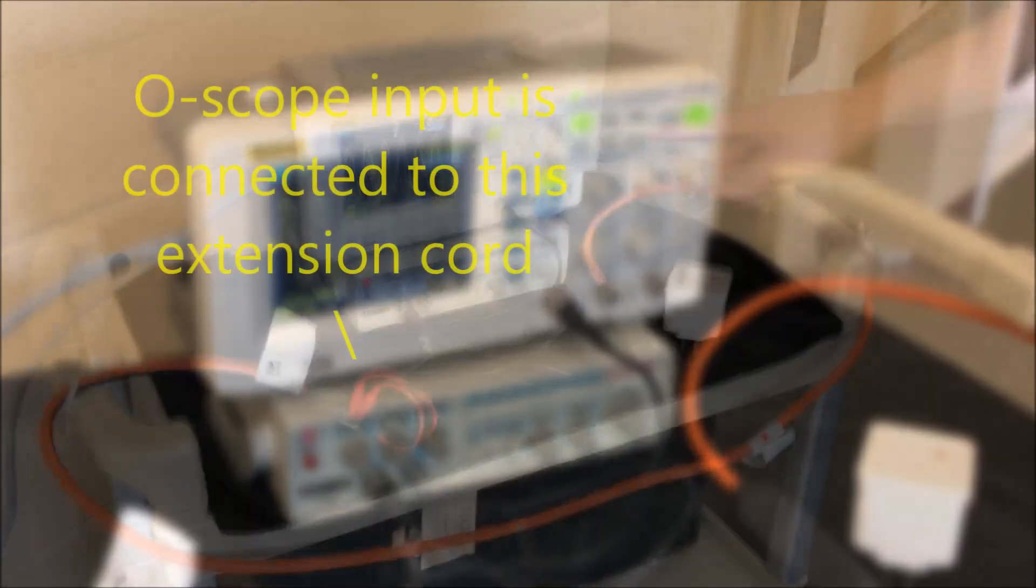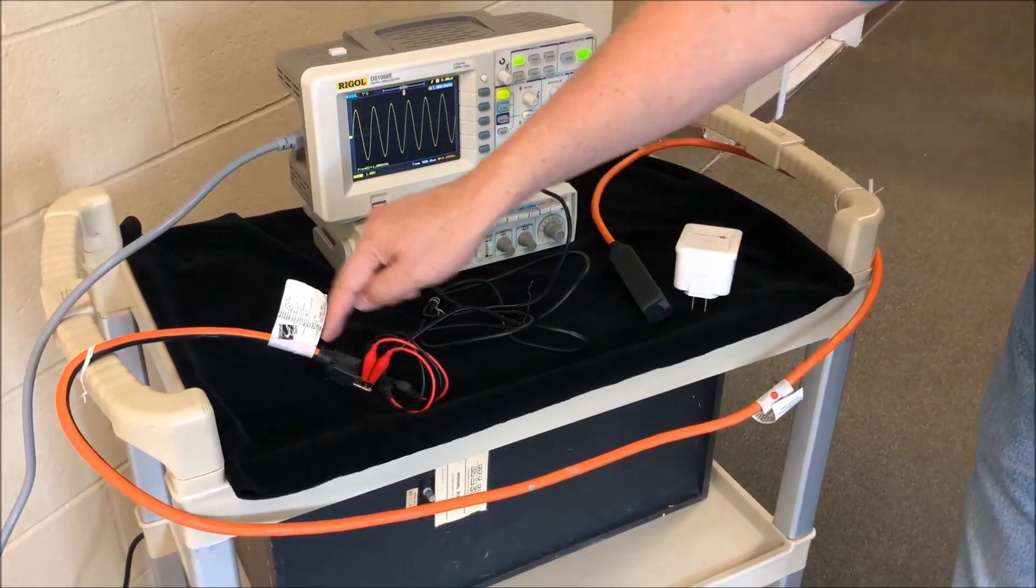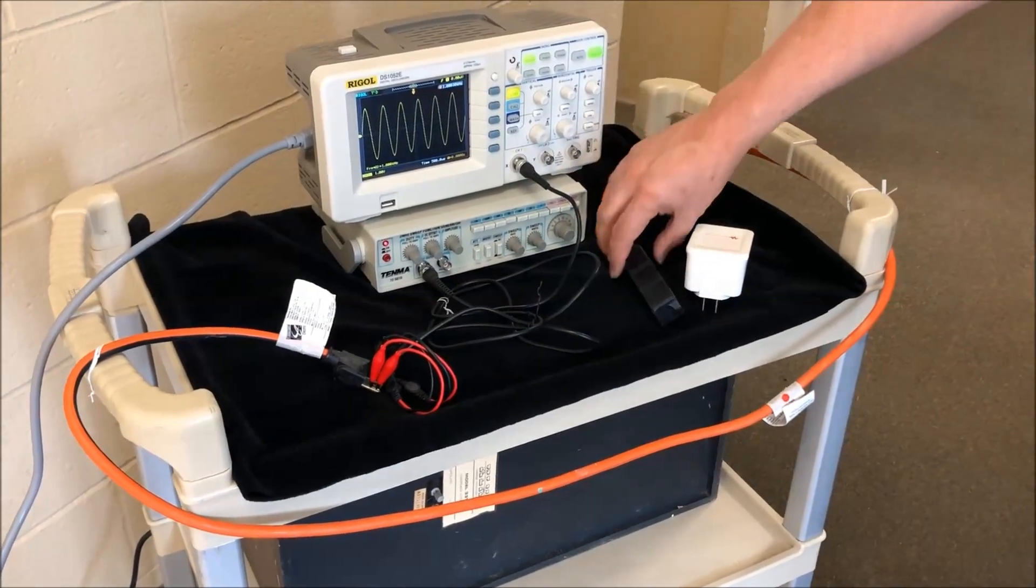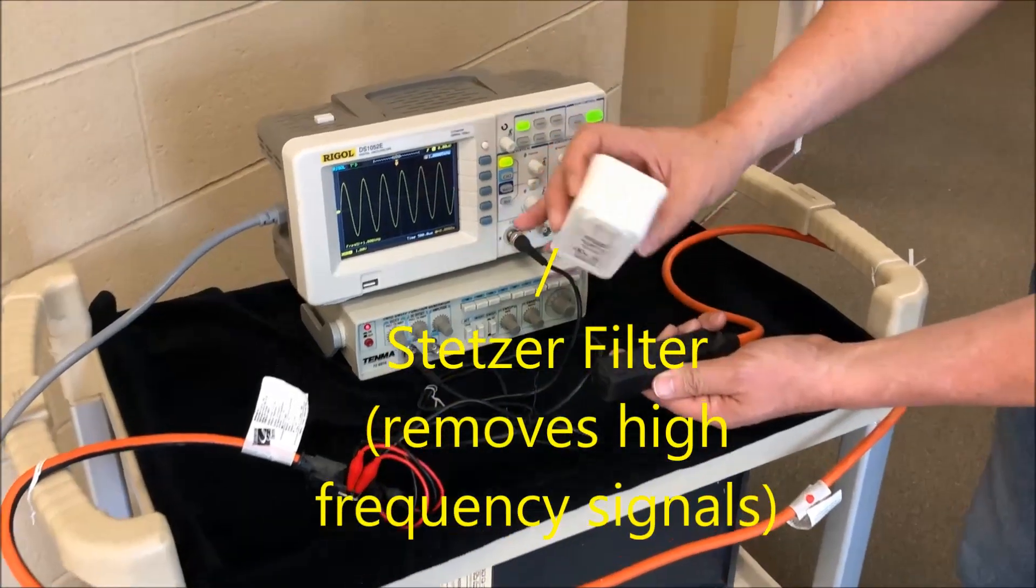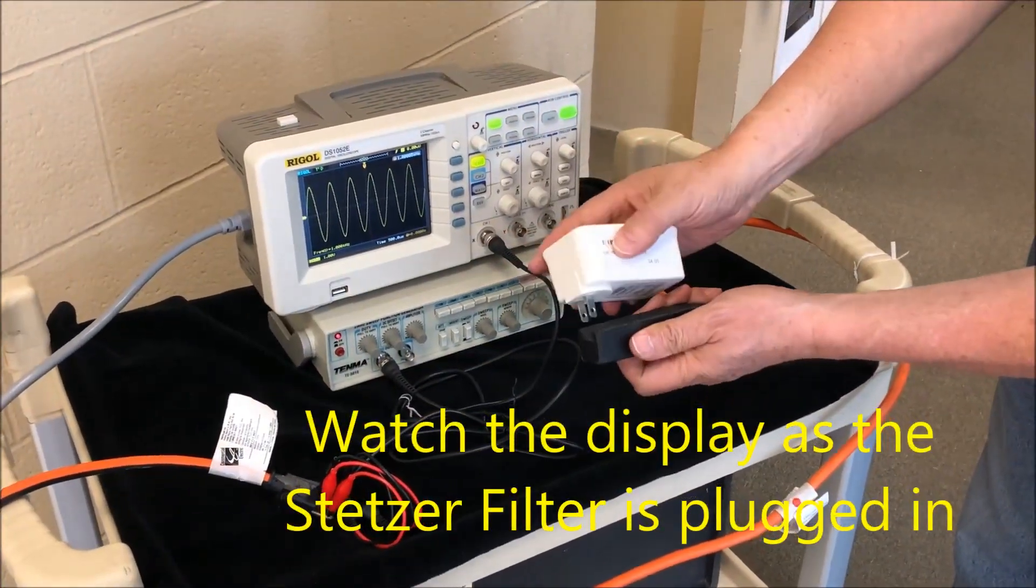So the oscilloscope gives its output to this extension cord, and the frequency generator puts its output to the same extension cord. We're using that because it just makes it easier to plug in the Stetzer filter into the other end of the extension cord, and then we can watch on the display to see the effect that the filter has.